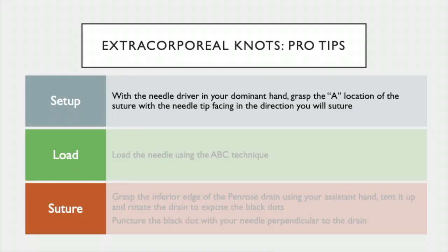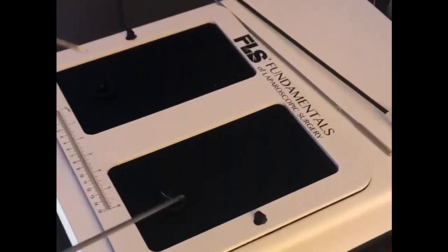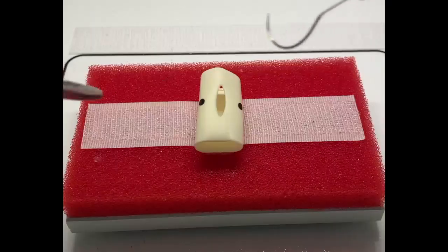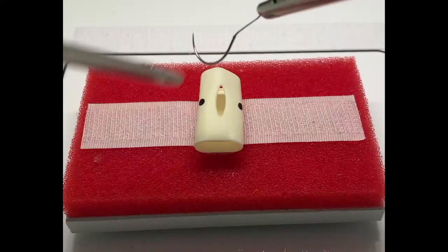The first pro tip is setup. To introduce the needle, grab the A location with the needle driver in your dominant hand and the needle tip facing the direction you will suture. Introduce the needle through the port in this orientation. This allows you to immediately begin loading with minimal adjustments.